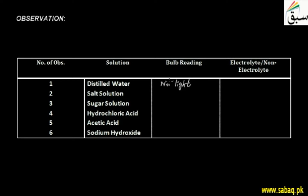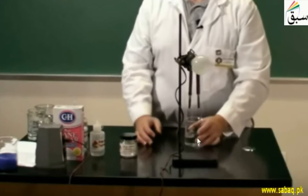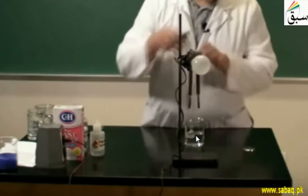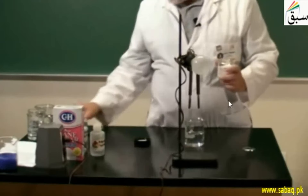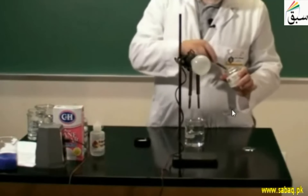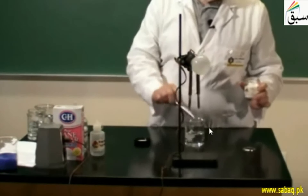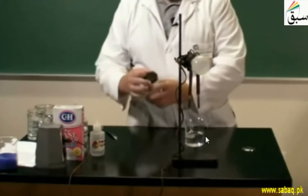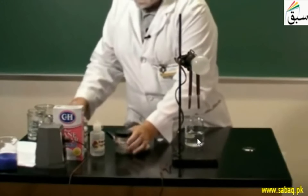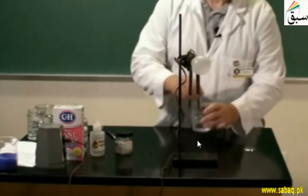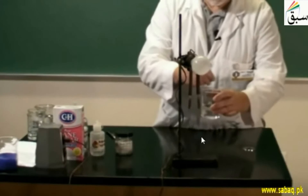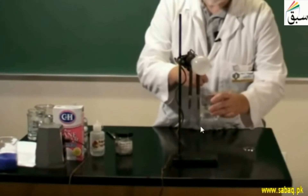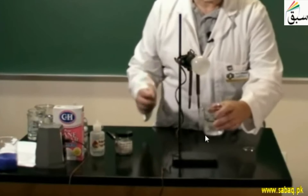After that, we will go to our next solution: salt solution. We have removed the electrodes and now we are preparing salt solution. Salt is NaCl, sodium chloride. We have added salt with a spatula into distilled water and stirred it. It has become a salt solution.